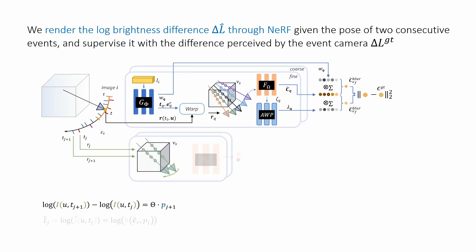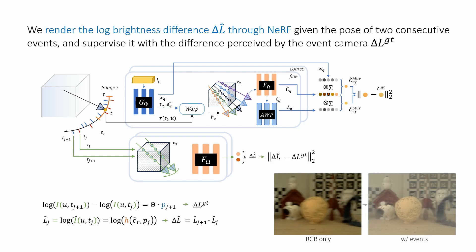we first render the pixel at two camera positions and map the pixel values to brightness with a function h. Then, we compute the difference in logarithmic space and supervise this quantity using the ground truth camera observation. In our formulation, the radiance field is shared between both events and colors.